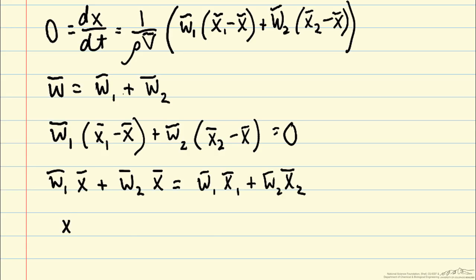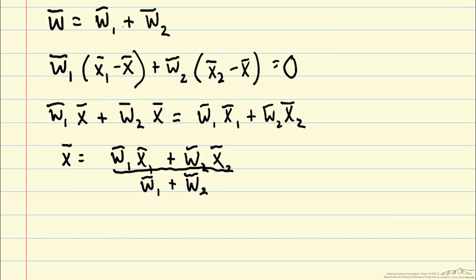Finally, we can solve for x bar. This really is a weighted average on our two inlet streams mass fraction, where the weighting comes from the flow rates that are coming in. So that is how you calculate the steady state outlet streams.